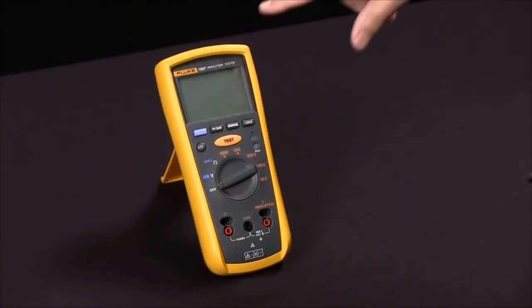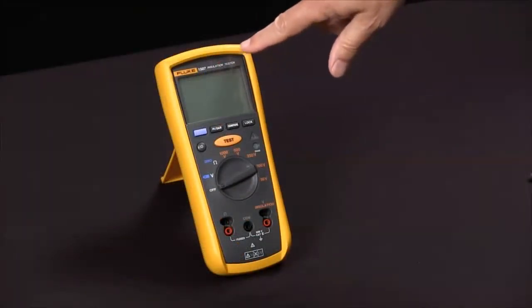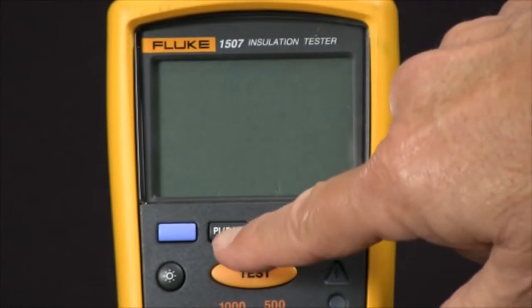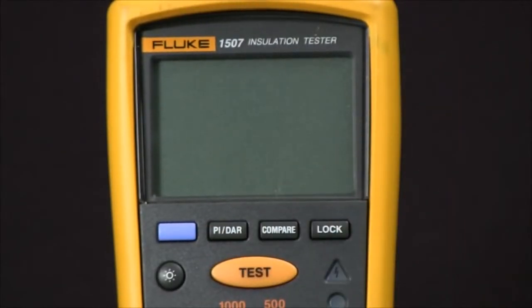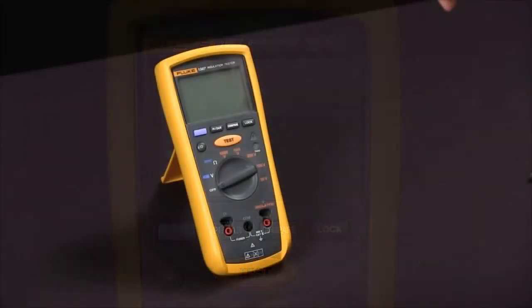To use our Fluke 1507 installation tester, we have two automated functions. Polarization index, which is a 10 minute to 1 minute ratio time test, and dielectric absorption ratio, which is a 1 minute to 30 second test.